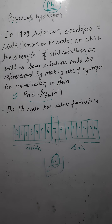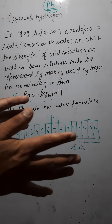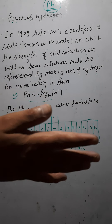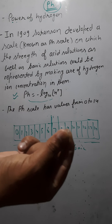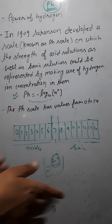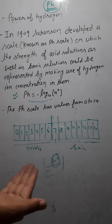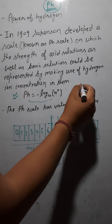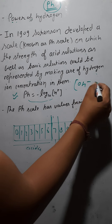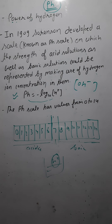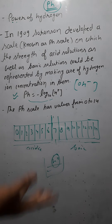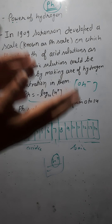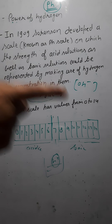If a solution has more H⁺ ions, it is acidic in nature. If the solution has more OH⁻ ions, it is basic in nature.